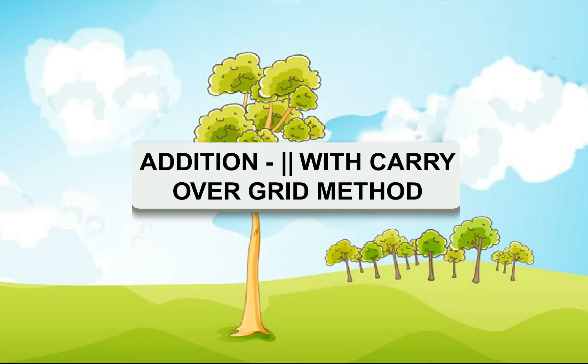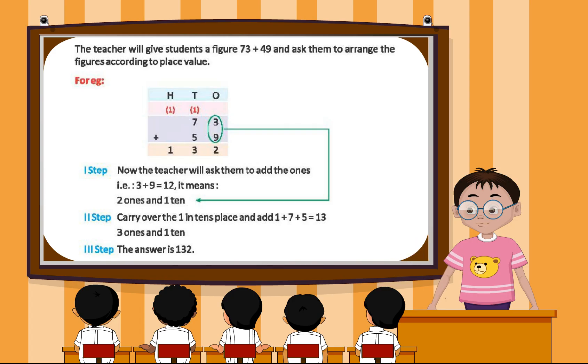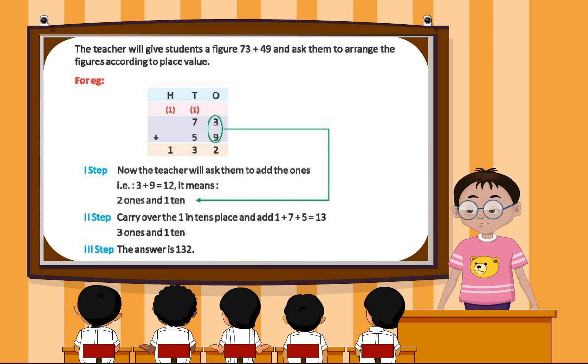Addition with carry over and grid method. The teacher will give the students the figure 73 plus 49 and ask them to arrange the figures according to place value.